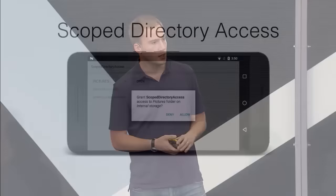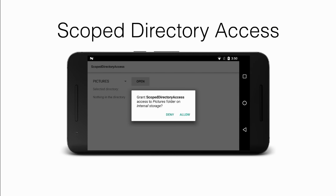Scoped Directory Access — a widely requested feature for specific access to specific directories on storage. If your application needs to look at pictures, music, or videos, up until now you had to request access to the entire storage, which was a scary permission for users in the Play Store. Now your application can specifically request access to one directory like Pictures or Music. Combined with the new permission system in M, it becomes very clear to the user what the application is going to be able to access.